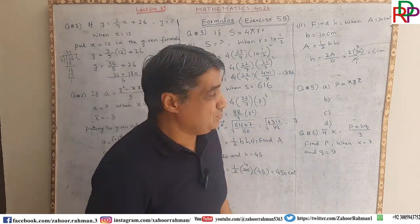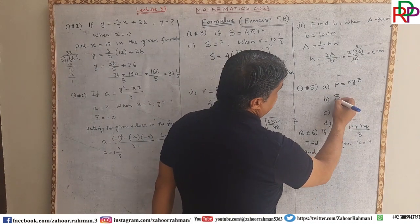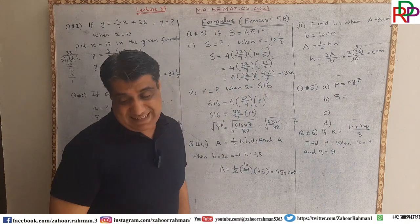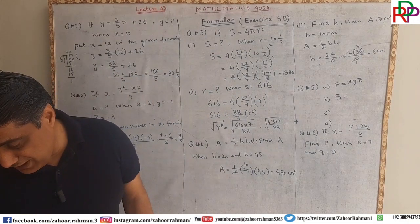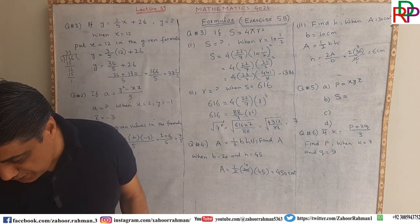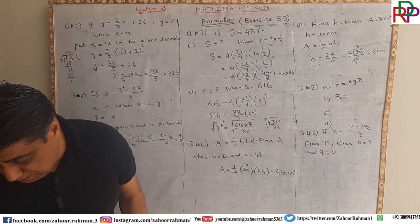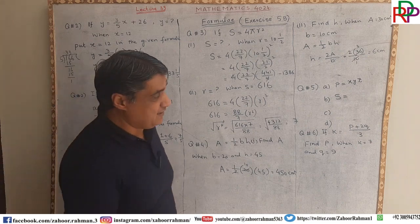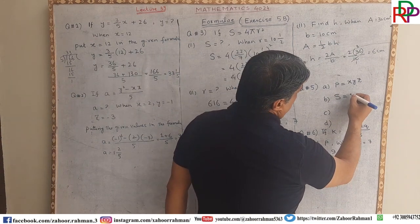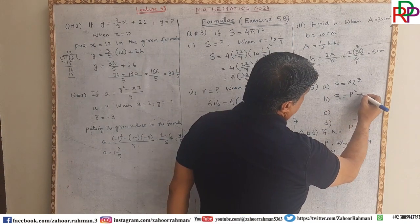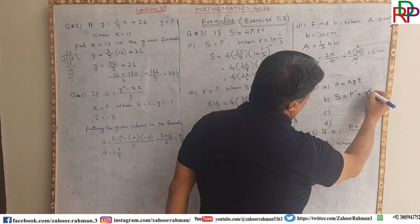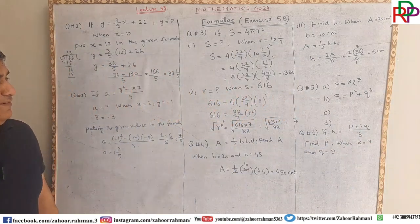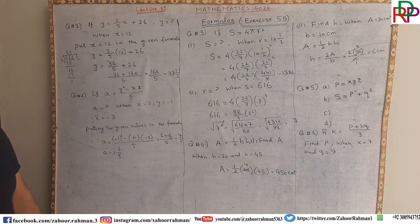The second part says: find the sum s of the square of p and the cube of q. You write s equals p squared plus q cubed in this particular fashion, and that will be the answer.